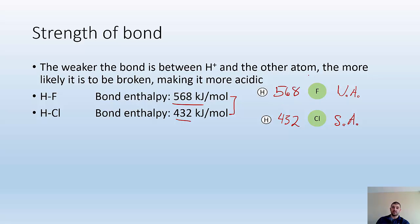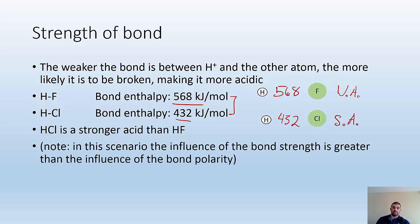Even though HF is more polar than HCl, it's a stronger bond, so it's harder to break — less likely for H+ to get kicked out. So HCl is a stronger acid than HF. In this scenario, the influence of bond enthalpy is greater than the polarity. HF is a more polar bond, but it's also a stronger bond, so that's why HF is a weak acid.